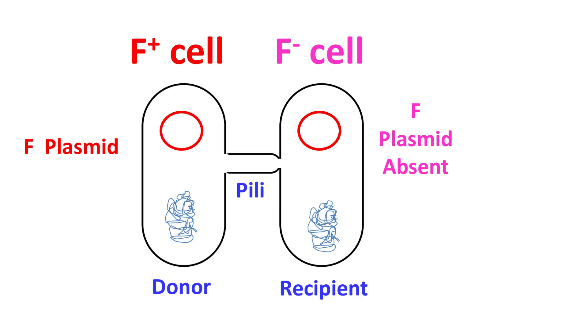In the next step, both the cells synthesize a complementary strand to produce a double-stranded circular plasmid.